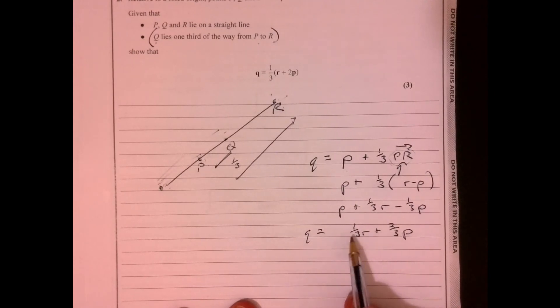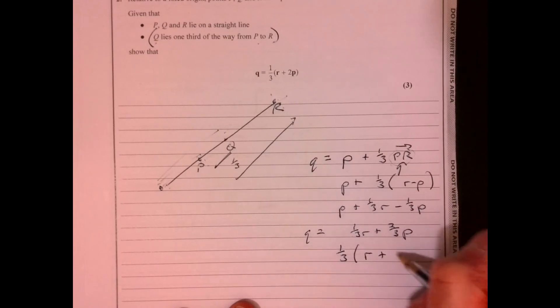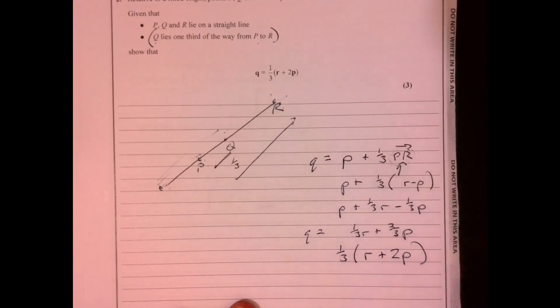Take out a factor of a third. And then that gives us R plus two P, which is what we wanted. All right. Three marks in the bag.